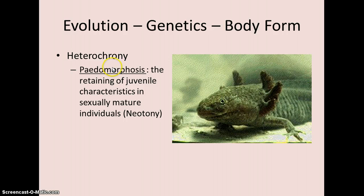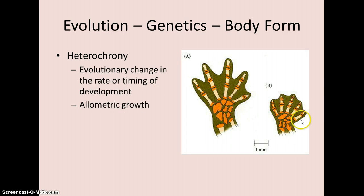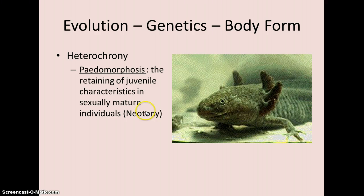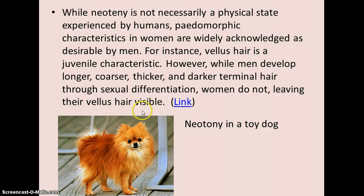When you have retention of juvenile traits, this is known as paedomorphosis. Here's a type of salamander that, as an adult, stays in water and has external gills — a paedomorphic trait. This is also known as neoteny, when juvenile traits are retained in sexually mature individuals. Certain dogs have been bred to exhibit this — flat-faced dogs show a more juvenile trait compared to the elongated snout of typical adult dogs.